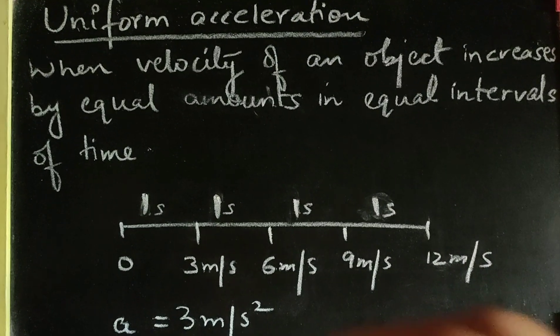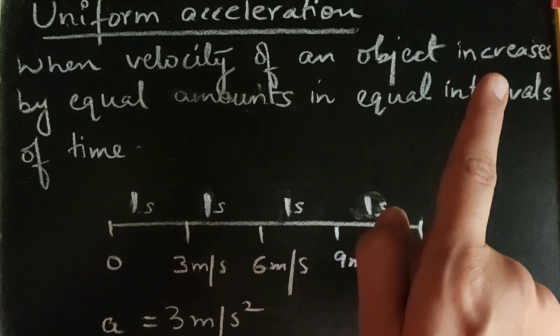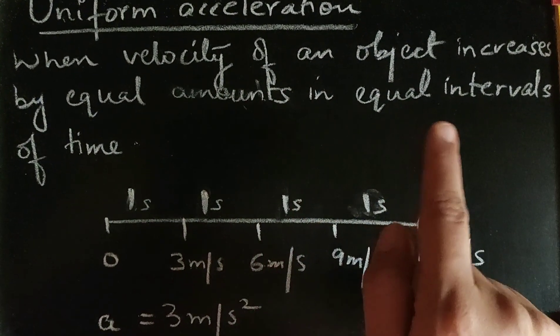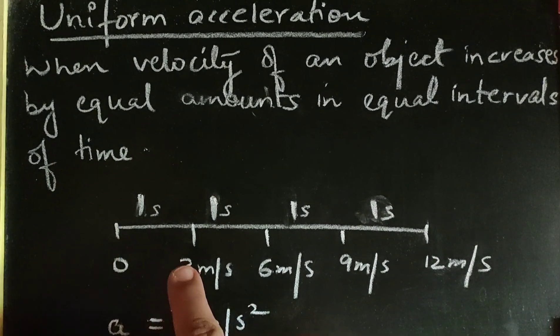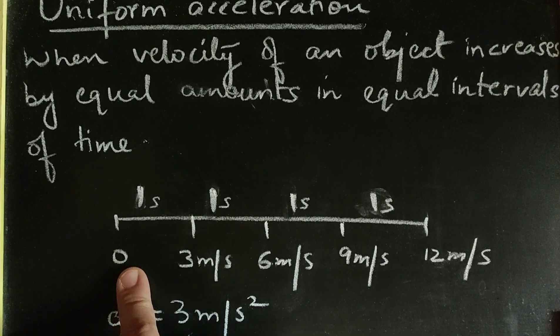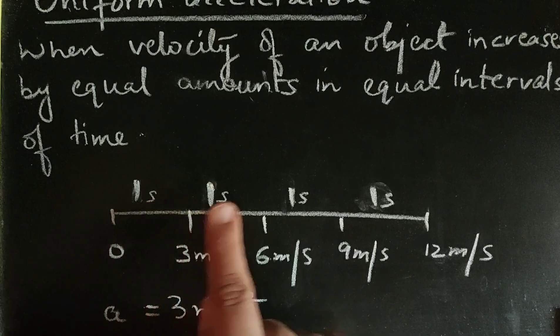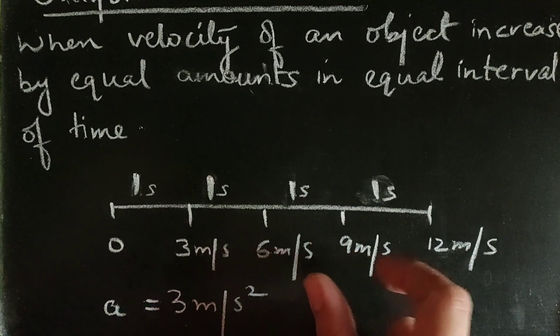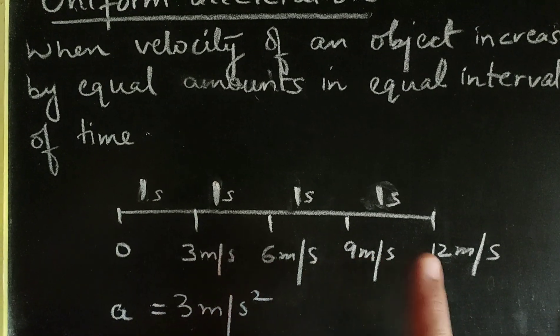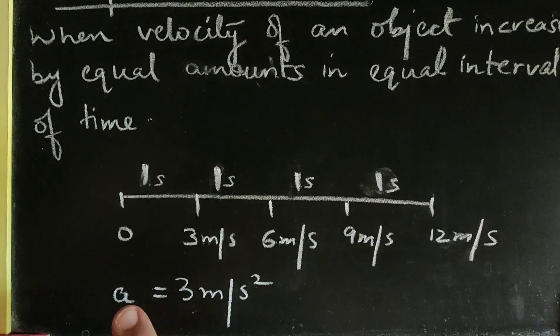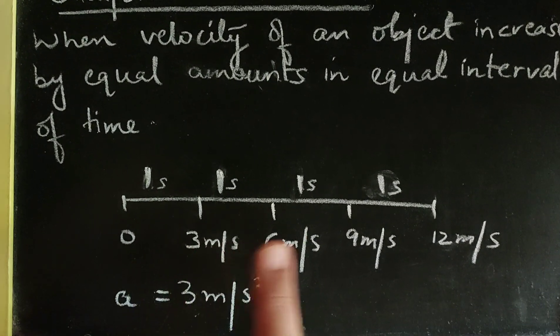Namaskar children. We had discussed acceleration in the last class. Today we are going to discuss that acceleration can be uniform as well as non-uniform. Uniform acceleration is when velocity of an object increases by equal amounts in equal intervals of time. For example, suppose the object is starting from zero velocity and the velocity is increasing by 3 metres per second after every 1 second. So in such a case the acceleration is uniform and it is 3 metres per second square.